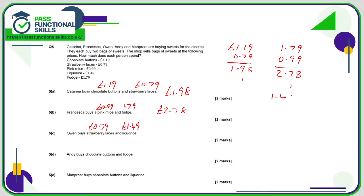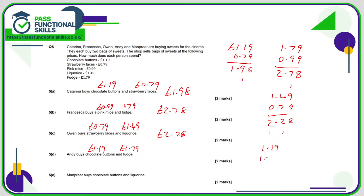Strawberry laces at 79p and liquorice at £1.49: column method gives 149 plus 0.79. 9 plus 9 is 18, carry one; 7 plus 4 plus 1 is 12, carry one — that's two pounds twenty-eight pence. Chocolate buttons and fudge: £1.19 plus £1.79. Column method: 9 plus 9 is 18, carry one; 7 plus 1 plus 1 is 9; 1 plus 1 is 2 — that's two pounds ninety-eight.